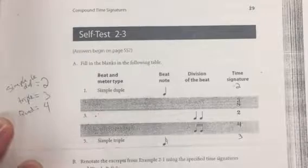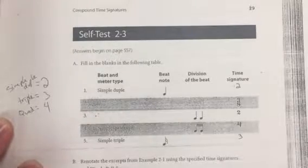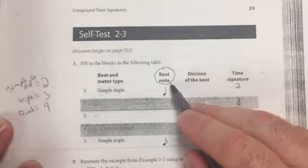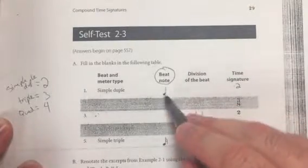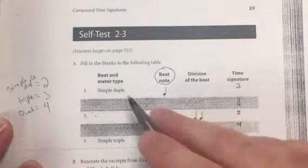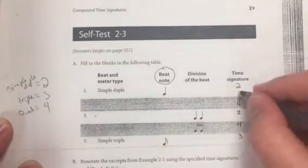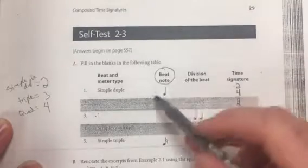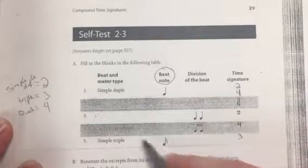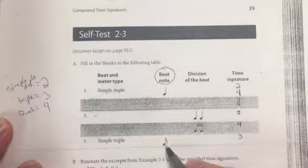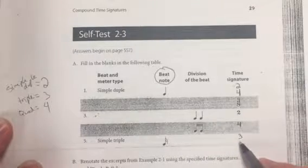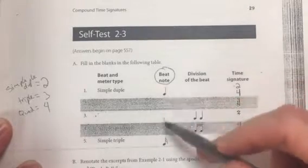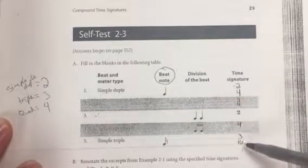Okay, now when you are dealing with simple time signatures, the beat note gives you the bottom number of the time signature. So in this case, we have a quarter note with simple duple. We're going to have a 4 over here. We're going to see what else we can figure out. Down in number 5, we have simple triple. Our beat note is a 16th note. That means the bottom number of the time signature will be a 16th note. So again, the beat note tells us what the bottom number of the time signature is.